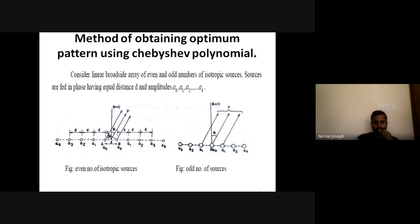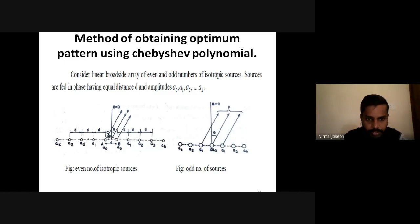C.L. Dolph is the scientist who suggested using the Chebyshev polynomial for this purpose, which is why it is called the Dolph-Chebyshev array. We are considering a linear broadside array. Two cases are considered: arrays with an even number of elements and arrays with an odd number of elements. The reference point is taken as point zero. For even number of isotropic sources, they can be arranged equally on both sides, where the even number is represented as 2K.